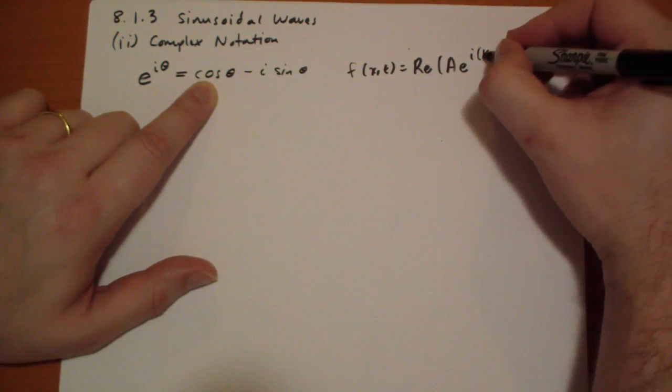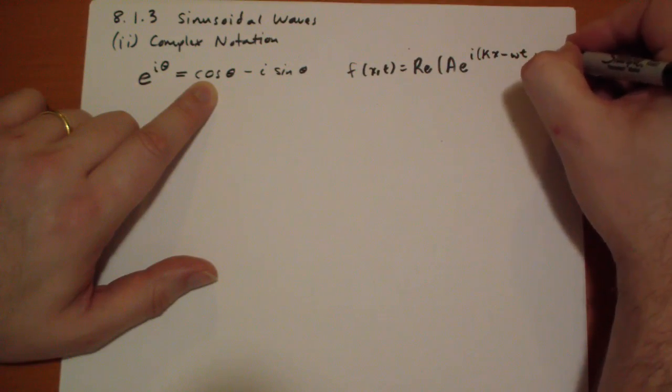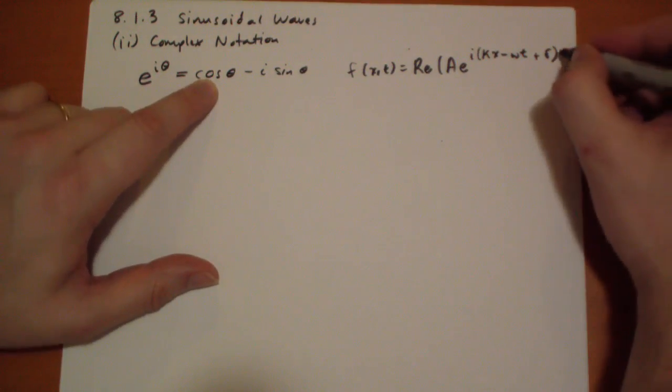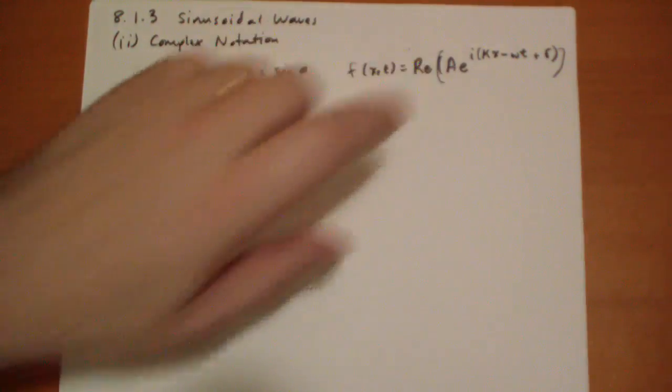Remember, omega is kappa times nu, the frequency, plus our delta. Okay? And that will give you the same function.